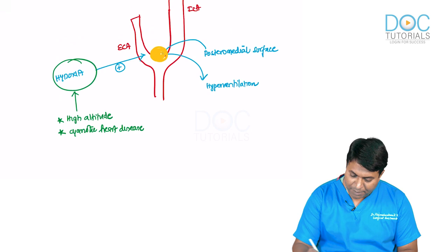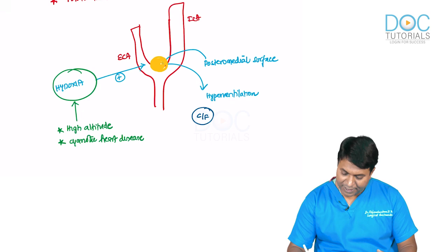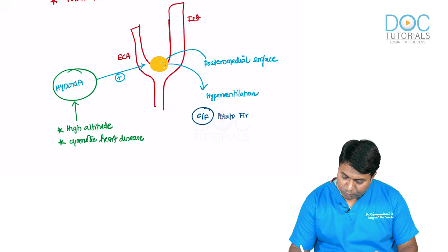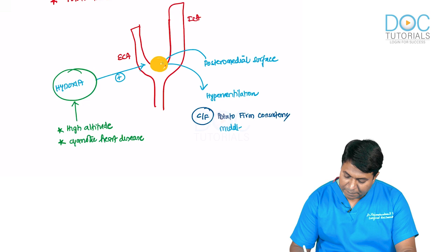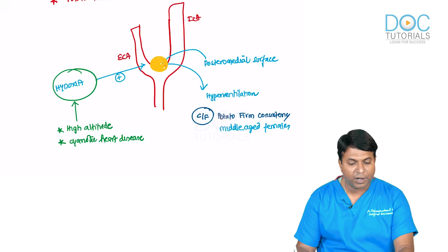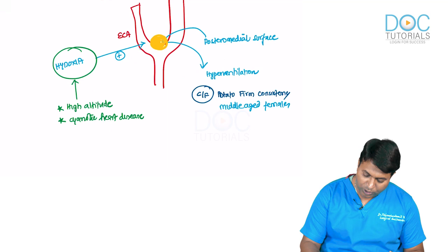When examining this swelling, the clinical features of carotid body tumor are: firm, potato-like consistency. It is more common in middle-aged females. I am going to tell you certain classical findings that indicate this is a carotid body tumor.